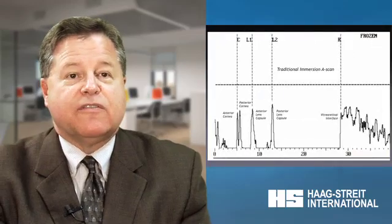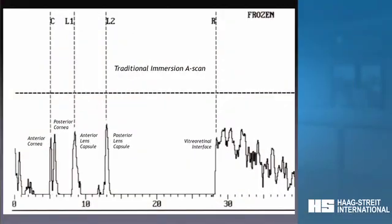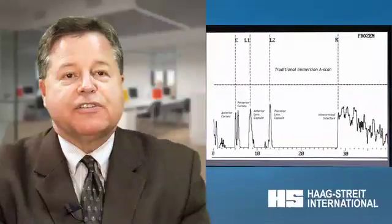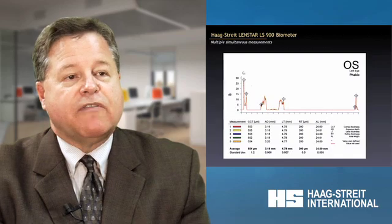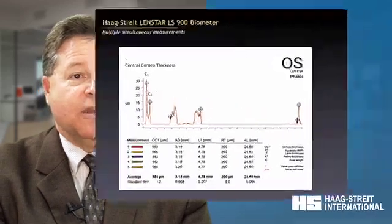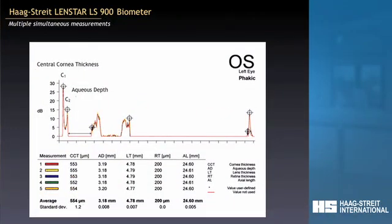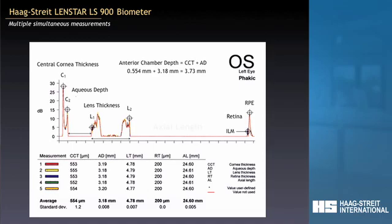As we all know, a traditional immersion A-scan looks like this, where we have graphic representations of the anterior lens capsule, posterior lens capsule, certainly the two spikes of the cornea, and the vitreo-retinal interface. For the LensStar, the graphic display is exactly the same. We have the anterior and posterior portions of the cornea, the anterior and posterior portions of the lens, and then the retina. We take all these together and we get the axial length.